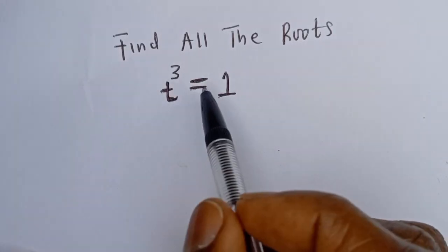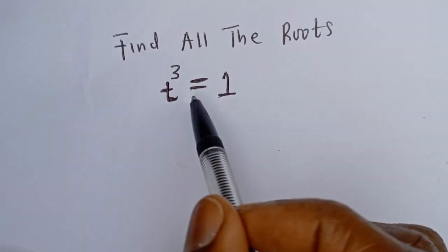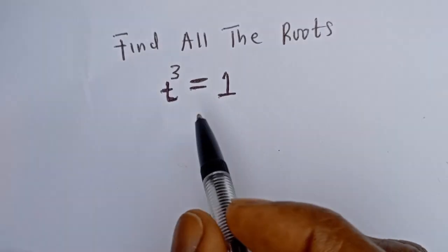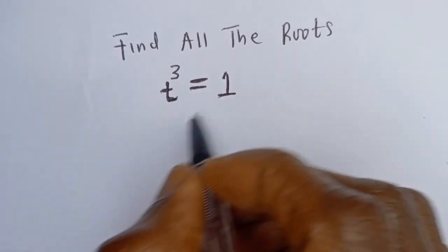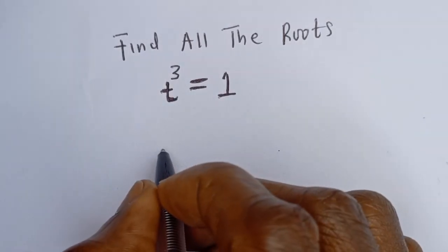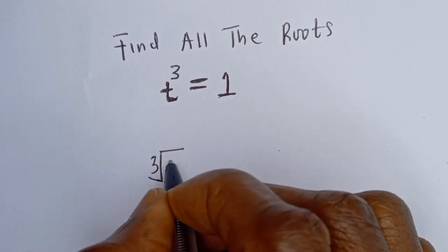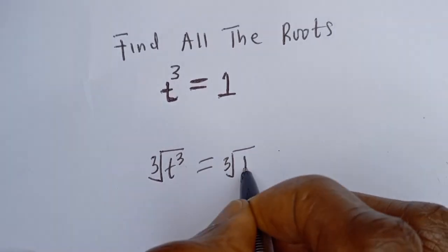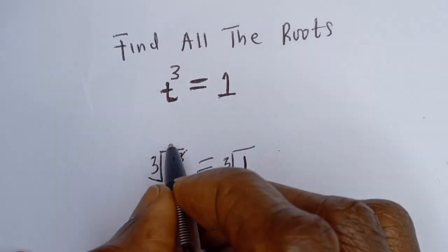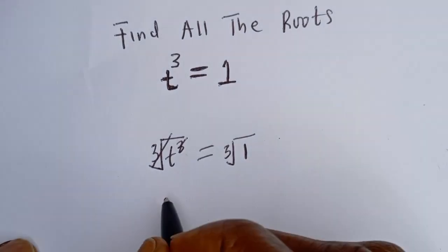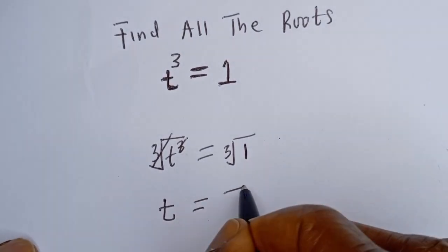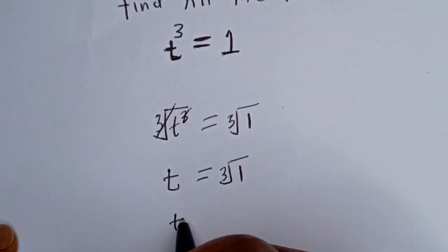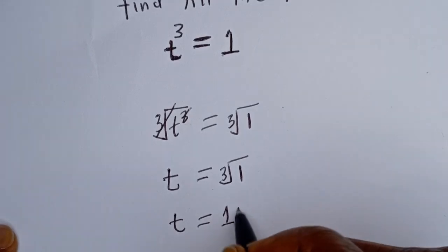Find all the roots of t to the power of 3 equal to 1. From here, we have t³ = 1. Let's take the cube root of both sides: cube root of t³ equals cube root of 1. This cancels, giving t equal to 1. But is t equal to 1 the only root? No.